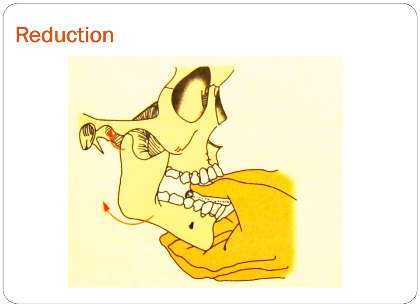To reduce TMJ dislocation, place both thumbs on the lower molar region bilaterally, support the mandible, and apply pressure downward, backward, and upward. You can see in the diagram how the reduction is performed — thumb pressure downward, then backward, and then upward.